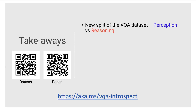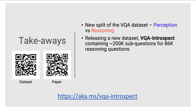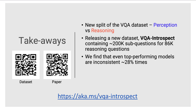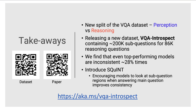In this work, we introduce a new split of the VQA dataset: perception versus reasoning. We release a new dataset called VQA Introspect containing 200K sub-questions. We find that even top-performing models are not always consistent. We introduce Squint to improve the consistency and reasoning capability of models. Our dataset can be found at the provided link. We believe our dataset has a lot of potential and look forward to the community using it in creative ways. Thank you.